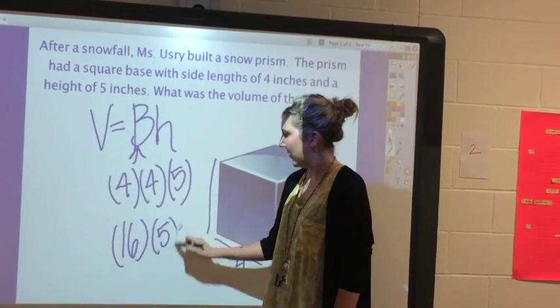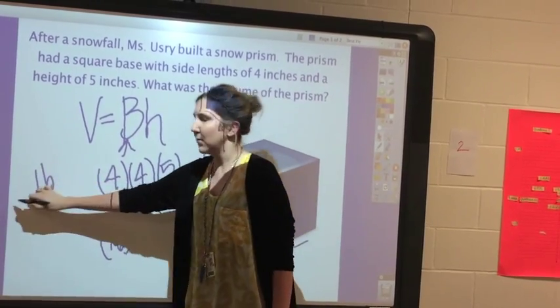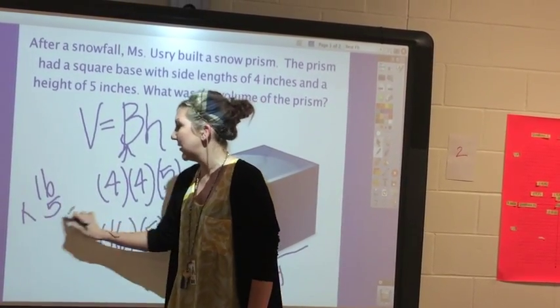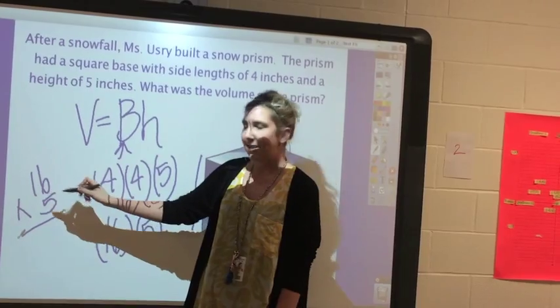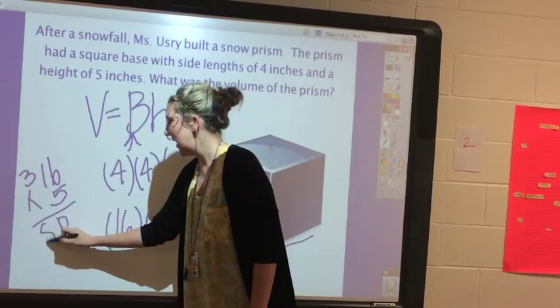In case we don't remember off the top of our heads, we can do it off to the side. Six times five is thirty, five times one is five, plus three is eighty.